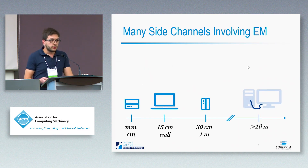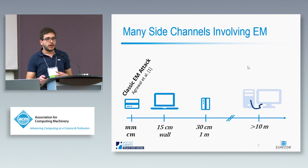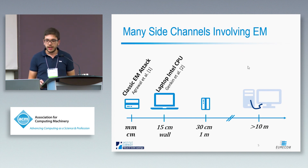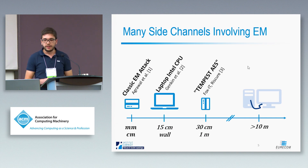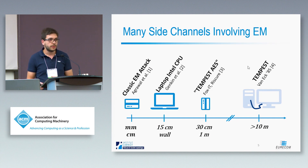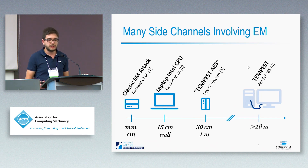There are a lot of side channel attacks based on electromagnetic emissions. We have the seminal papers on electromagnetic attacks which work in the range of millimeters or centimeters. We have some work on laptops where the authors can break cryptographic algorithms through a wall from around 15 centimeters. There is a maximum distance of 30 centimeters or even one meter in a laboratory anechoic chamber environment called Tempest AES, against AES 256. There is also an interesting series of attacks called Tempest — one example is on video, where signals from a VGA or HDMI cable can be retrieved from more than 10 meters.